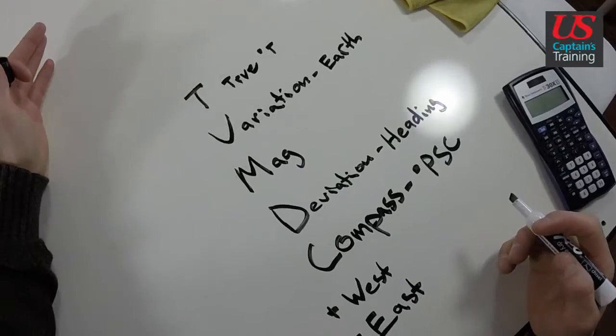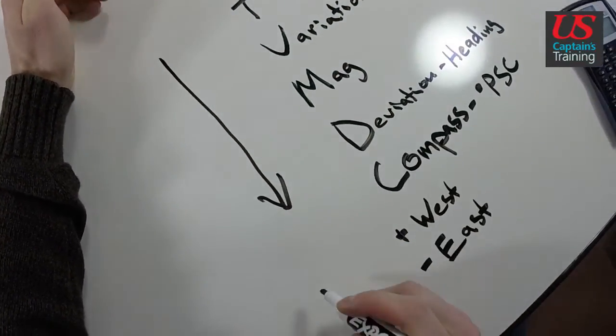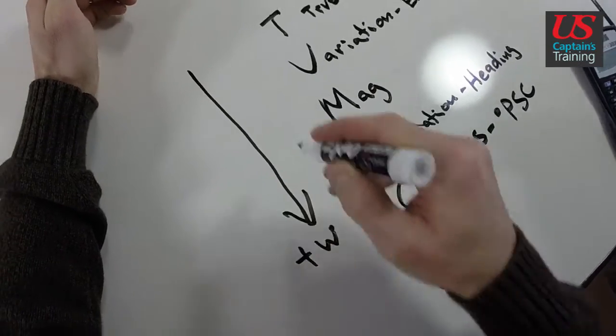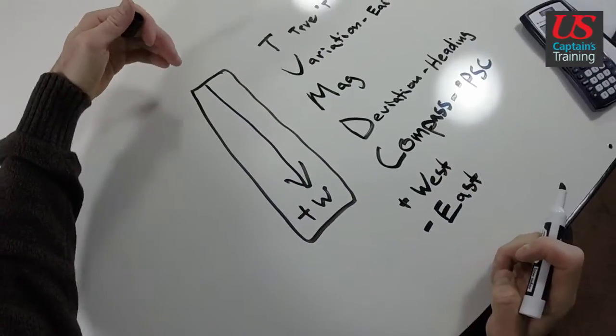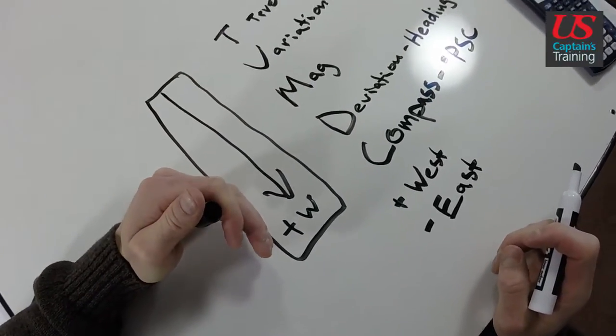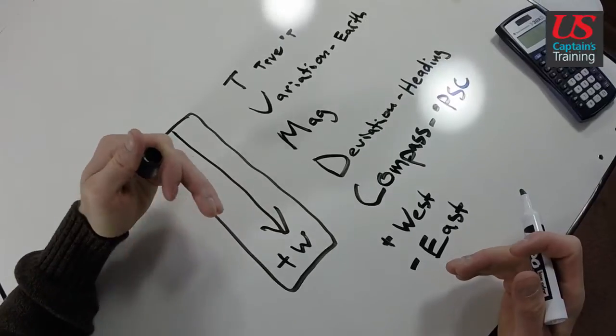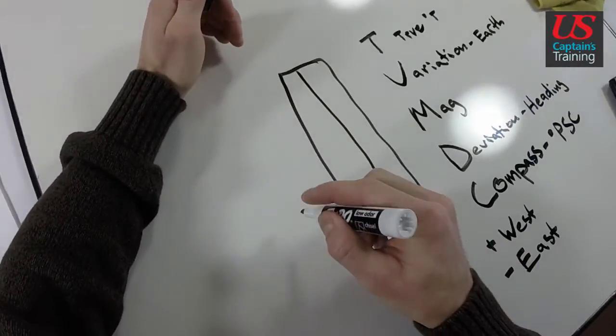I make one drawing that says this. It's an arrow. Points down. And it says, add west. This is a powerful drawing. Because you know you're going down from true to compass. You're going to add west. That means you subtract east. So, with this drawing, you can take from it a lot.